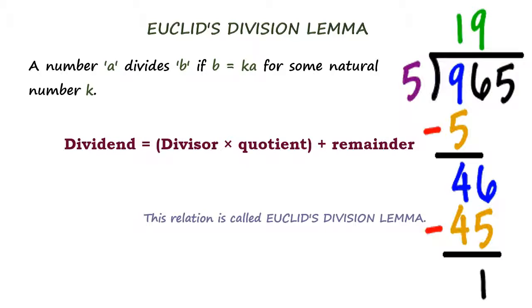We have a demonstration at the extreme right. For example, 965 is divided by 5. The quotient here is 19. On further division, we get the remainder as 1. This familiar relation is named after the father of geometry, the great mathematician Euclid.